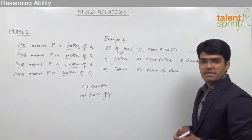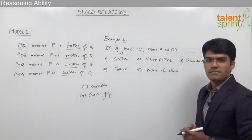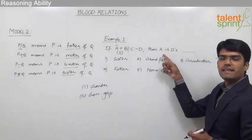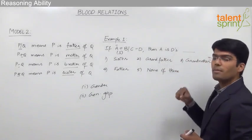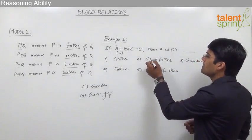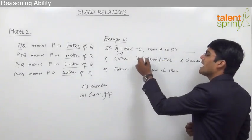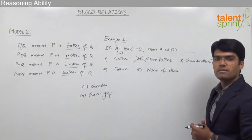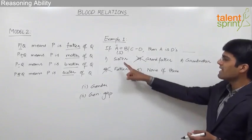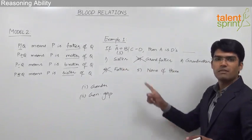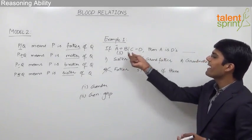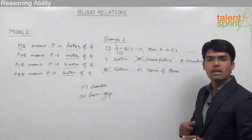Once we know that A is a female person, we can eliminate some of the options. We need to find out the relationship between A and D, so the relationship should represent a female person. Option 2 is grandfather — that cannot be the answer. Option 4 is father — that cannot be the answer either. So the possible answers are either sister or grandmother, because both these options denote a female person.